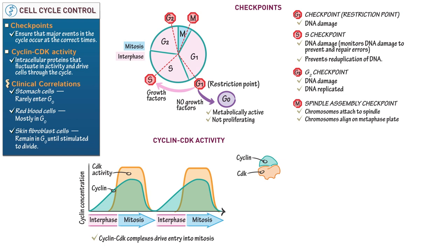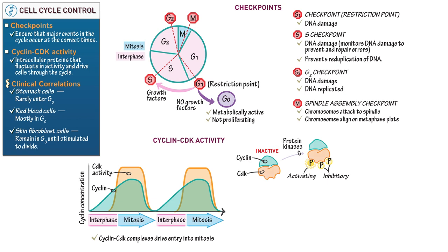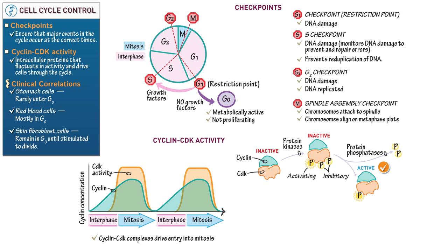Now let's learn how cyclins activate CDKs. The cyclin-CDK complex starts inactive. It must be phosphorylated at one site and dephosphorylated at two other sites to become active. Show a cyclin-CDK complex with one activating and two inhibitory phosphates added by protein kinases — this complex is also inactive. Next, protein phosphatases remove the two inhibitory phosphates, leaving only the activating phosphate. Label this cyclin-CDK complex as active and indicate that it promotes mitosis.